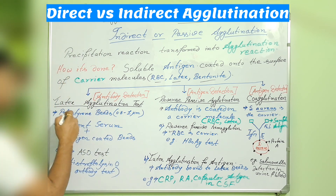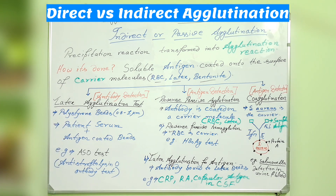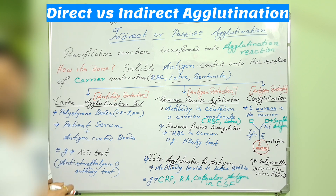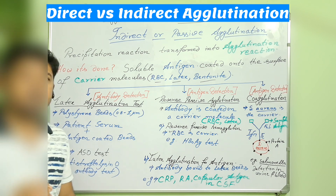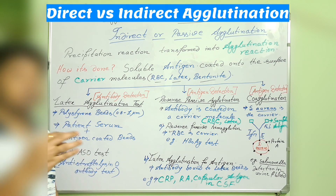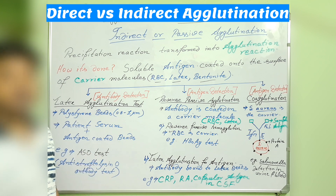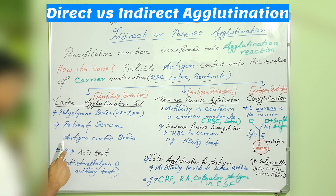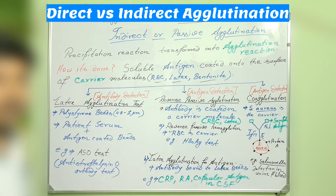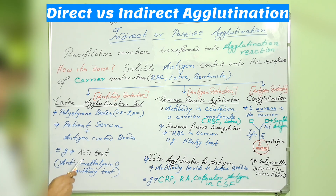In the latex agglutination test, latex beads made of polystyrene molecules with a diameter of 0.8 to 1 micrometer are used. The antigen is coated on these beads. When one drop of patient serum is applied to the antigen-coated bead solution, a visible clump forms that can be easily identified. A common example is the ASO test — anti-streptolysin O antibody test — which uses the latex agglutination principle to detect antibody in the patient's serum.